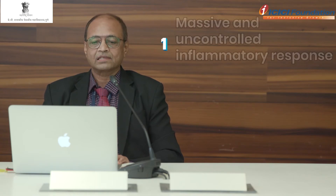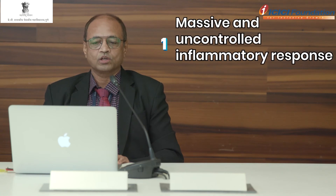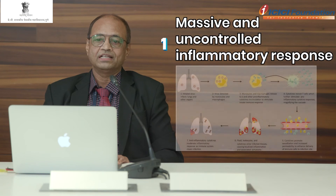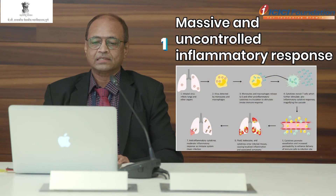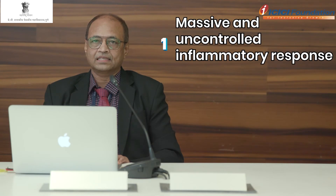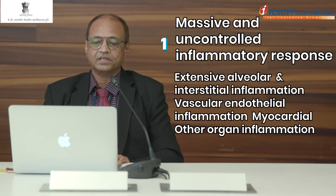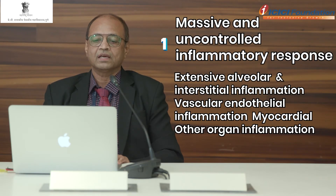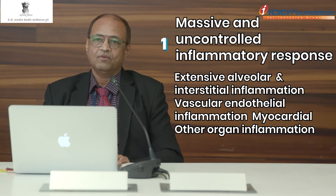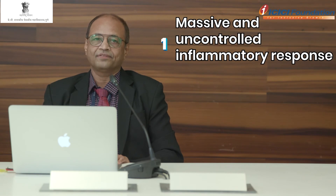Pathologically, in individuals suffering from COVID-19 disease, 3 to 4 important things are happening. First, there is a massive and uncontrolled inflammatory response caused by pro- and anti-inflammatory cytokine dysregulation. Because of this, there is extensive alveolar and interstitial inflammation, vascular endothelial inflammation, myocardial inflammation, and inflammation in other organs including the pancreas and kidneys.